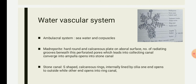In today's topic we are focusing on the water vascular system of the starfish. The starfish belongs to the phylum Echinodermata. The general framework of the water vascular system is the same — presence of madreporite, stone canal, ring canal, radial canal, Tiedemann's body, Polian vesicle, lateral canals, and tube feet. Only the arrangement differs according to the species.